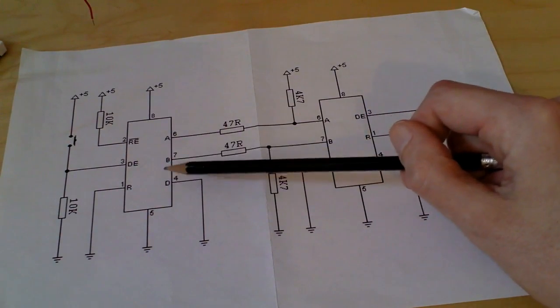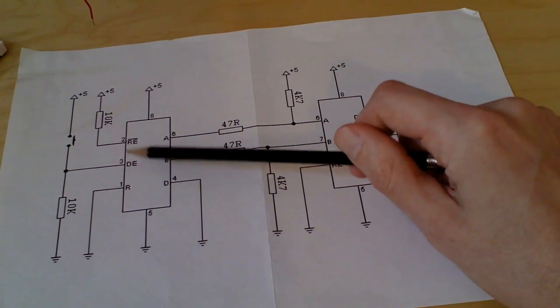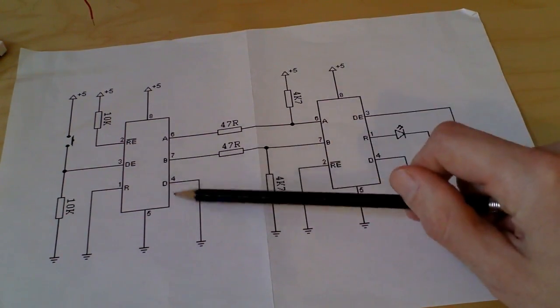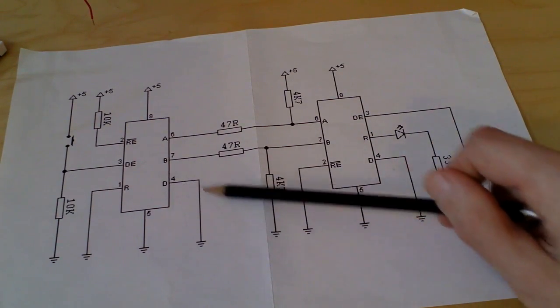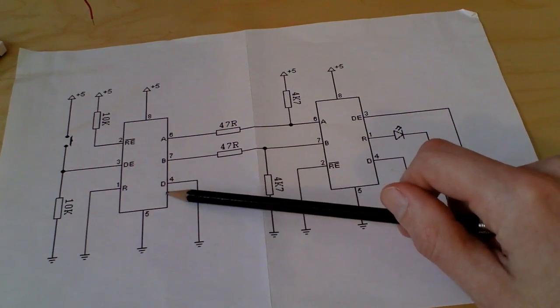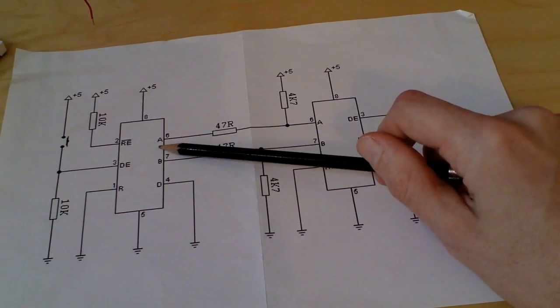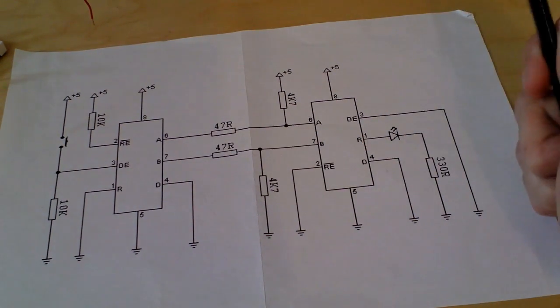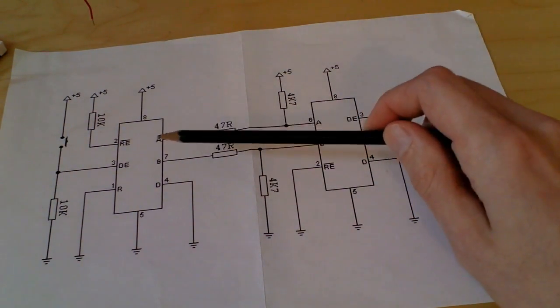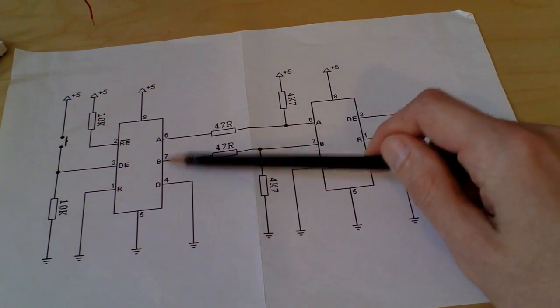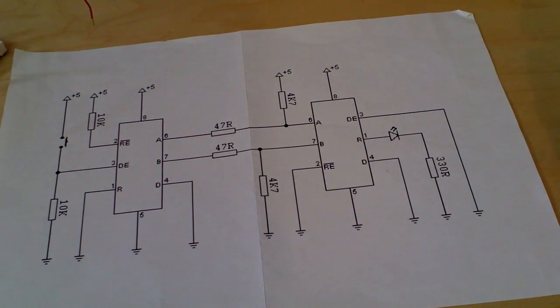And when we enable the driver, we're saying the data because it's being pulled low is a zero. So the A line goes to zero, and correspondingly the B line will go to one because of the inverted signal.